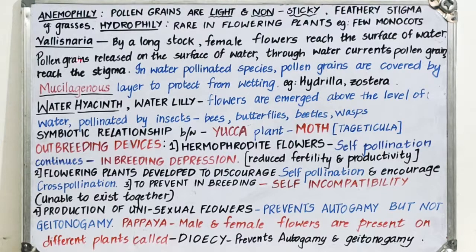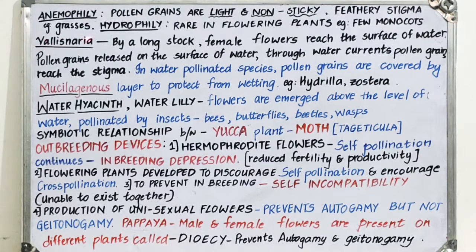Examples for anemophily are grasses — the Graminae family. All the grasses are included in the family called Graminae.